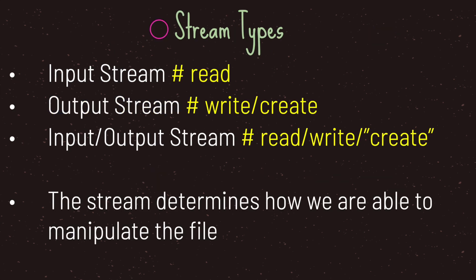Now there are different stream types. The first type is an input stream — you use an input stream when you want to read from a file. The second type is an output stream, used when you want to write and/or create a file. And lastly you have an input/output stream which allows you to read, write, and/or create a file. The stream we choose determines how we are able to manipulate the file — if we open an input stream we are not able to write, and if we create an output stream we are not able to read from a file.